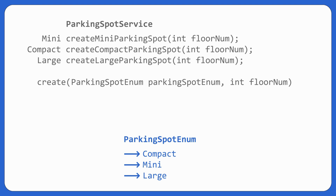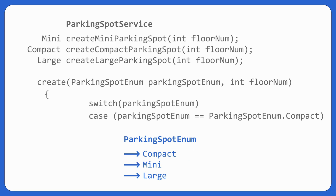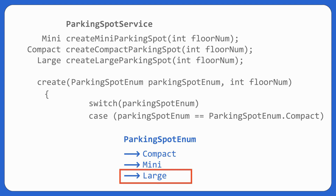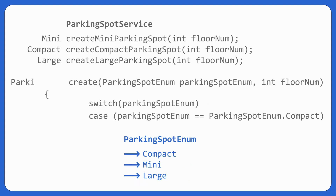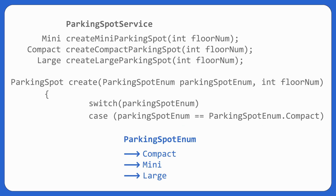We can use a switch case to check if the enum is compact, then create and return a compact parking spot; if mini, return a mini parking spot; same for large. The return type would be parking spot. But as we've seen before, this switch case violates the Open-Closed Principle — if a new parking spot type comes in tomorrow, we'd have to change the `create` method.